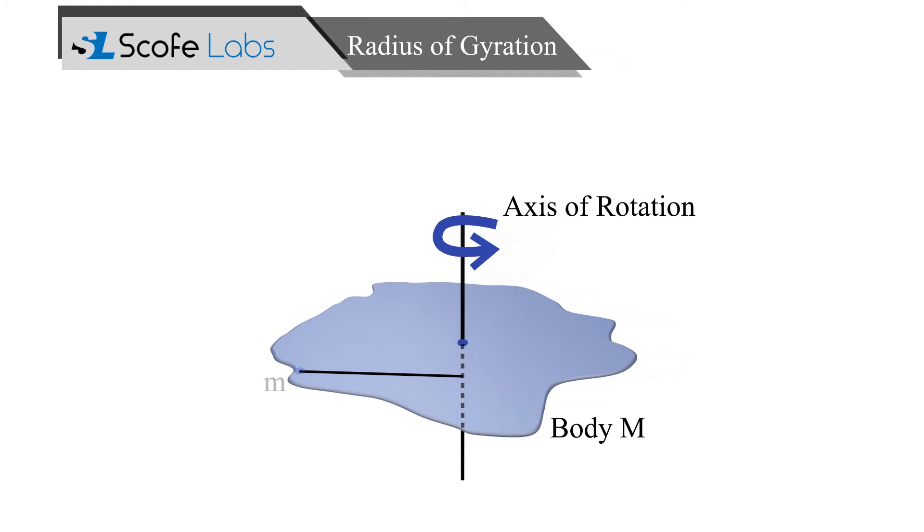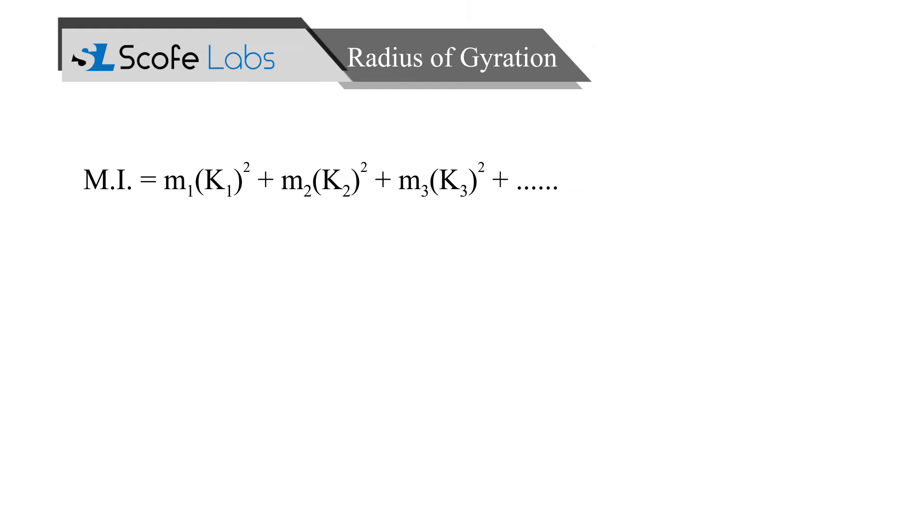Consider a body of mass m consisting of n particles each of mass m situated at a distance k1, k2, k3 to the n number of k from the axis of rotation. The moment of inertia about the axis is given by: